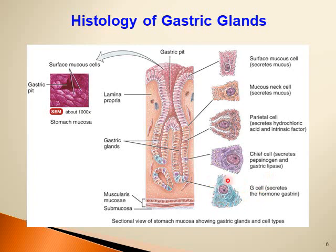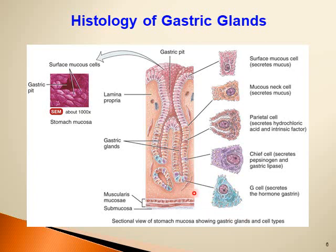In the gastric gland we also encounter endocrine cells called G cells, which release the hormone gastrin. So the gastric glands contain exocrine cells — such as mucus neck cells, parietal cells, and chief cells — that release their secretions into the lumen of the gland, and endocrine cells that release their hormones into the bloodstream rather than through tubes or canals.